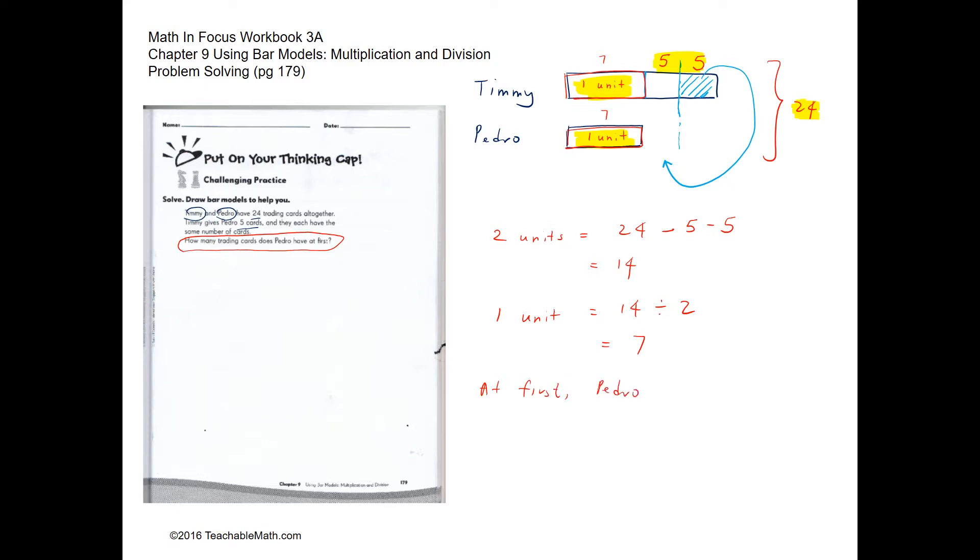So at first, Pedro would have 7 cards. We can always check the math, so we can check it over here. At first, Pedro would have 7 cards and Timmy would have 7 plus 10, which is 17. And 7 and 17 make 24.